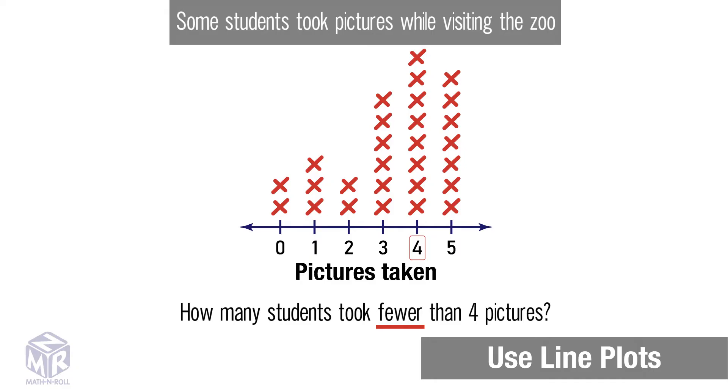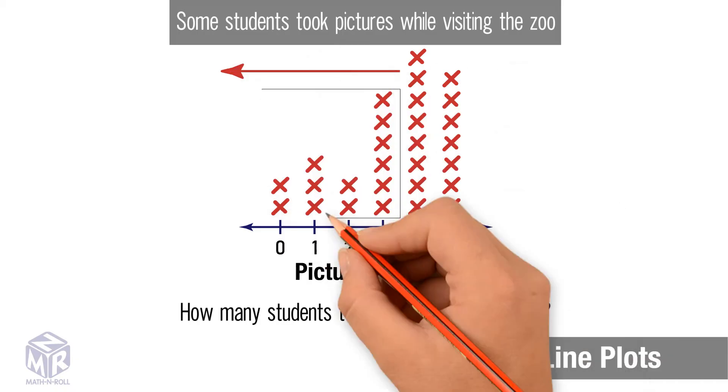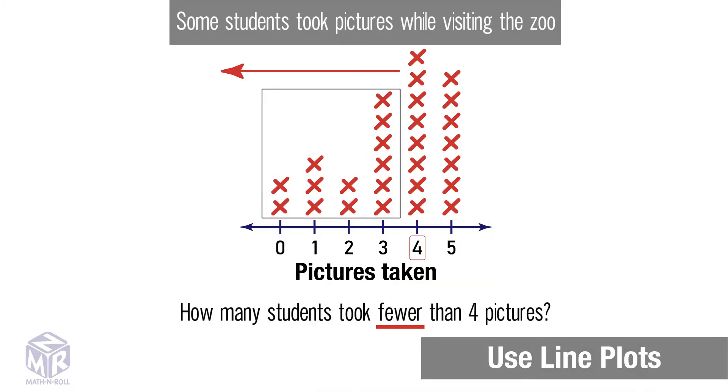Fewer than four does not include four. So we count all of the x's to the left of four. There are 13 x's. 13 students took fewer than four pictures.